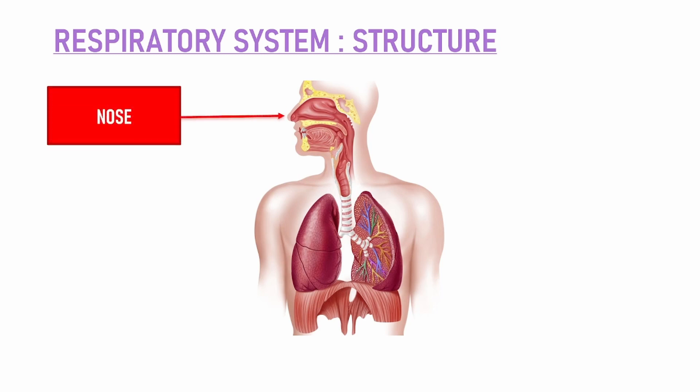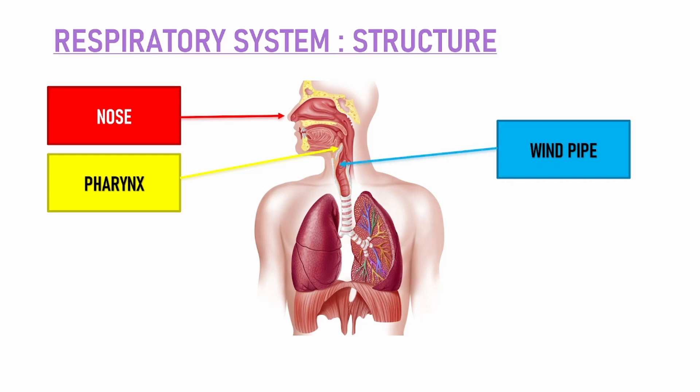Sabse pahle, respiration starts with the nose — ab in ki functions ki baare mein hum aage baat karenge, abhi sirf hum structure ko samjhte hai. So it starts with your nose, jahaan pe air ko breathe in kiya jaata hai. Then there is the pharynx — pharynx ek soft area hai throat mein, hamaare gale mein ek soft area hai jahaan se food pipe aur wind pipe dono start hote hai. Wind pipe ke andar se air jo hum breathe in kar rahe hai woh lungs tak jaata hai, aur air jo hum breathe out karte hai woh nose tak jaata hai.